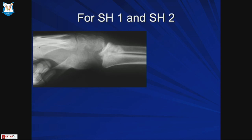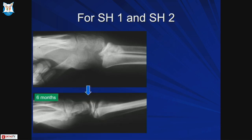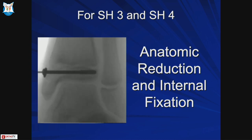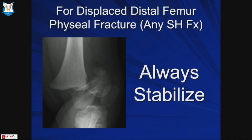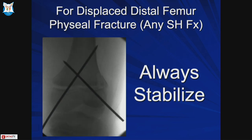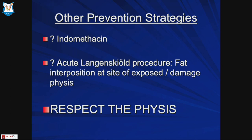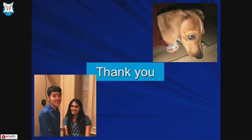Regarding prevention: for Salter-Harris 1 and 2 injuries, most will remodel so do not attempt manipulation after five to seven days. For Salter-Harris 3 and 4, anatomic reduction and internal fixation are needed. I perform percutaneous fixation of all medial malleolus physeal fractures without arthrograms or open approaches. Always stabilize any displaced distal femur physeal fracture - reduction alone is not enough, it needs fixation. Respect the physis; fat interposition can be used if cement is not available. Some reports also support indomethacin for prevention.